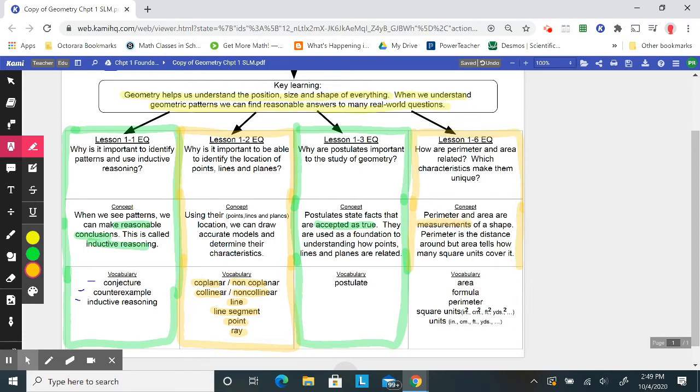Perimeter is the distance around, but area tells how many square units cover. You need to know the difference between area and perimeter, what the formulas are, and how you label areas with square units and perimeter with regular units.